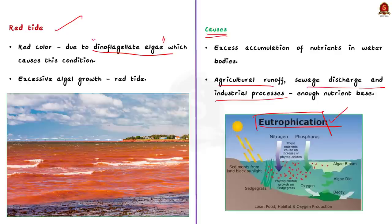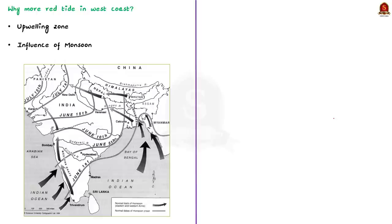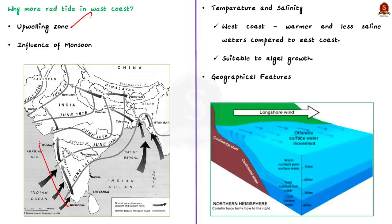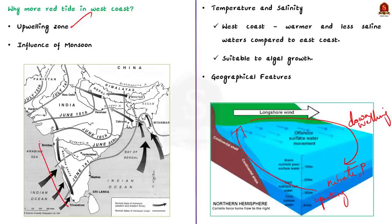Red tides occur more on the west coast of India than the eastern coast. The first reason is the upwelling zone. The west coast near the Arabian Sea experiences seasonal upwelling, which is a process where cold, nutrient-rich water from the deep ocean rises to the surface. Nutrients like nitrate and phosphate support the growth of phytoplankton, which in turn encourages algal bloom.